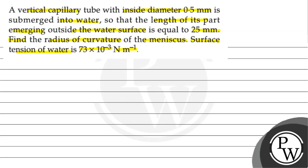So the question says that a vertical capillary tube with inside diameter 0.5 mm, when it is submerged in water, has 25 mm part of the tube above the water surface. So we need to find the radius of curvature of the meniscus.